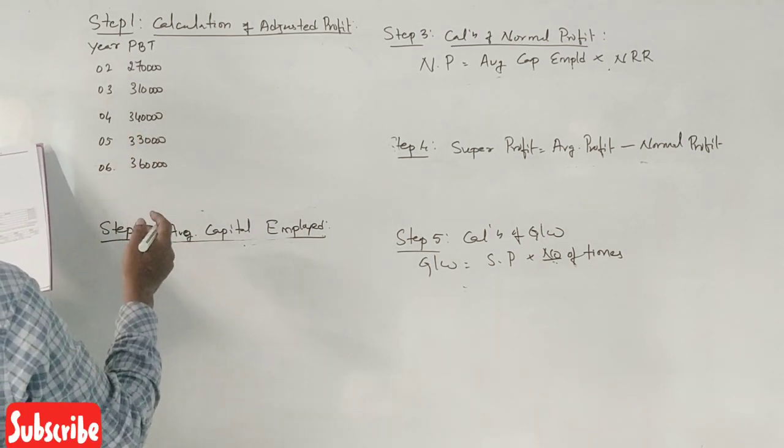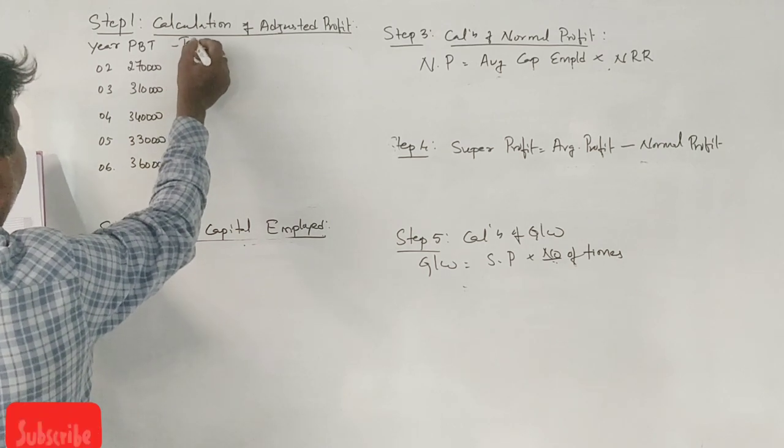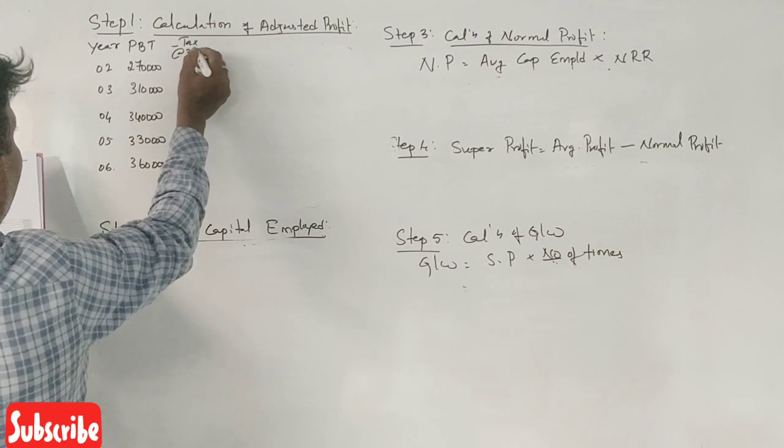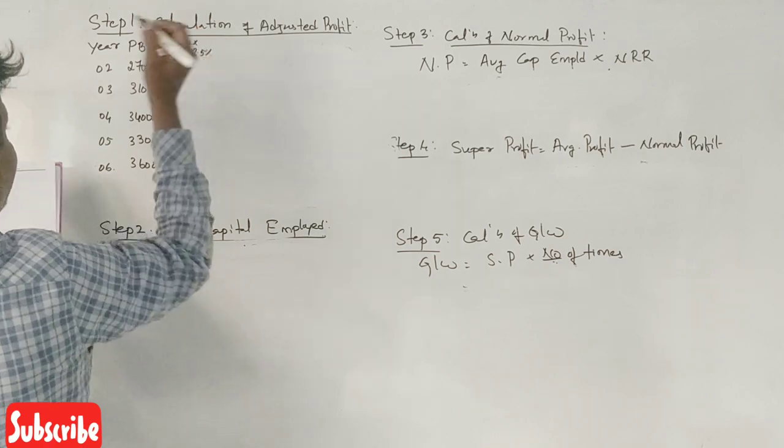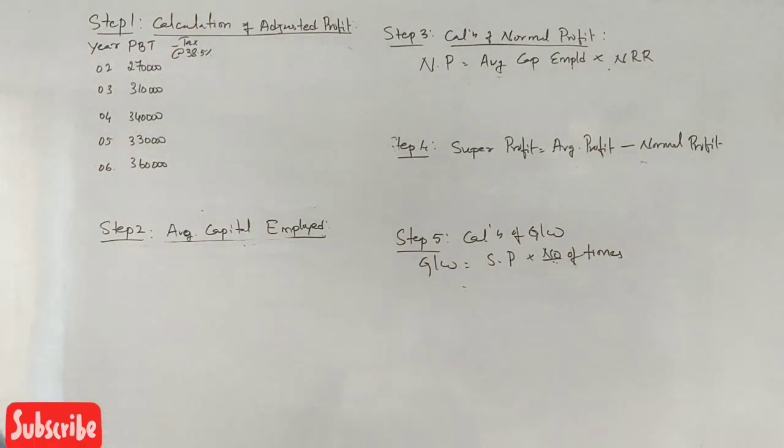Next row: tax minus. Tax is 38.5% per year. Here you will calculate tax for each year.